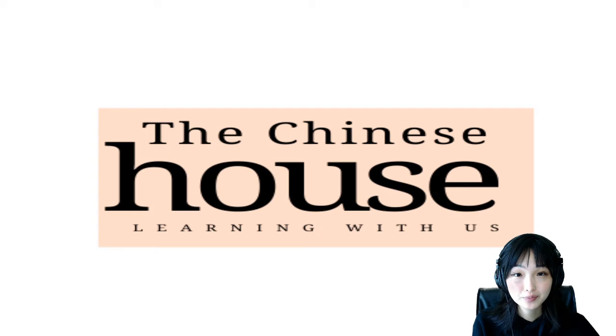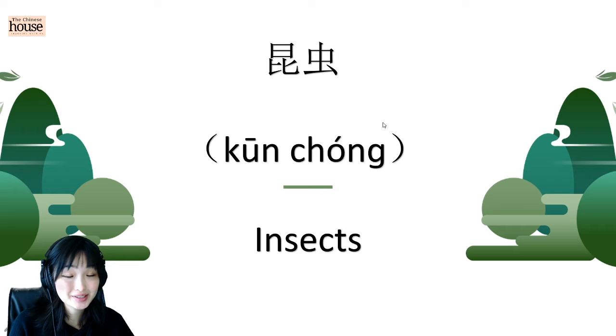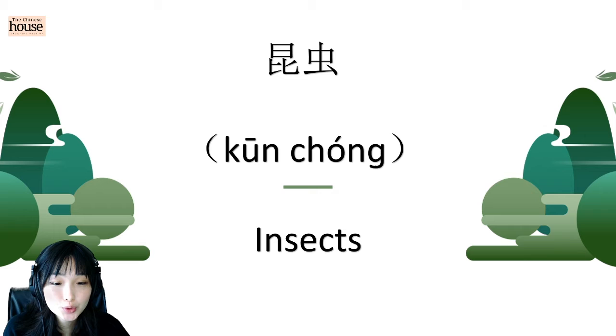So first of all, let's look at these two new characters, which means insects. 昆虫. Read after me. 昆虫. Good, again. 昆虫.